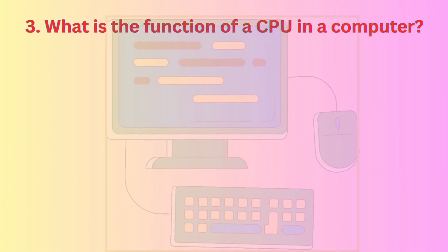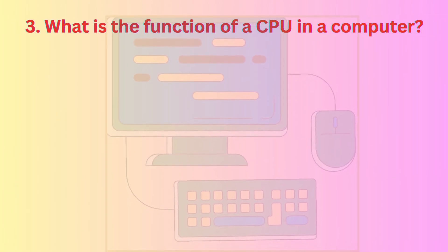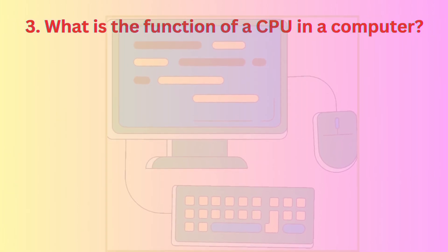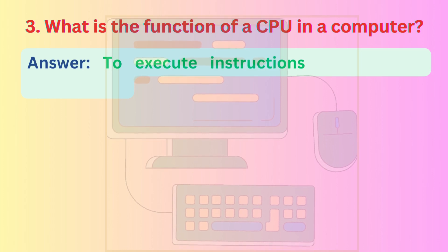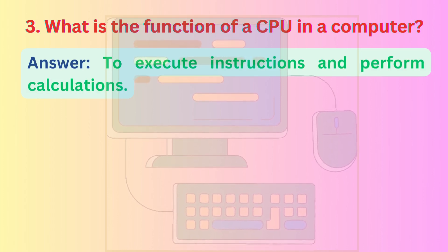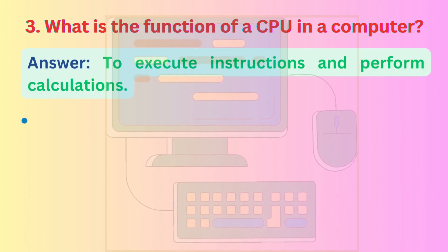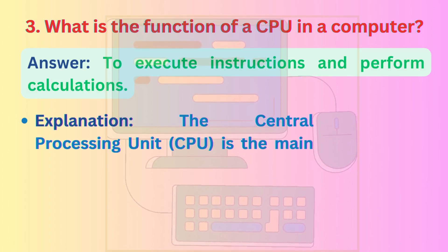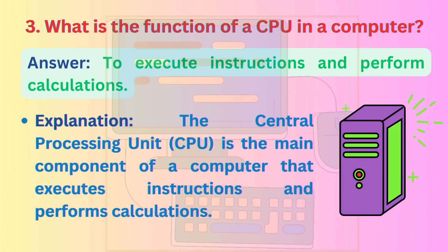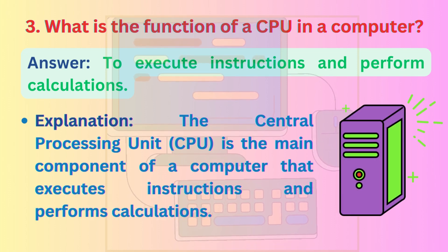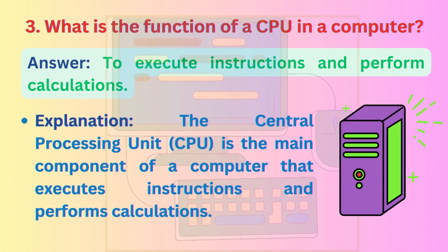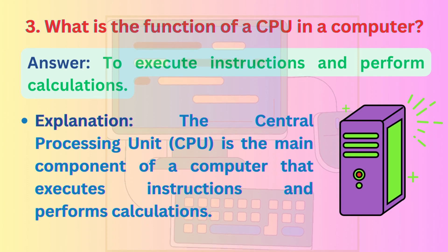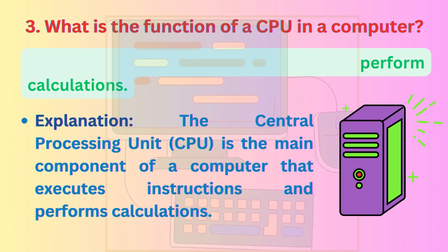Question 3: What is the function of a CPU in a computer? Answer: To execute instructions and perform calculations. Explanation: The central processing unit (CPU) is the main component of a computer that executes instructions and performs calculations.